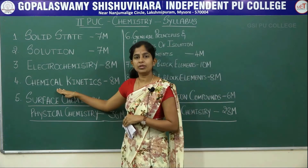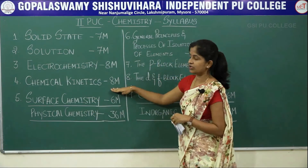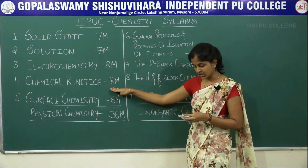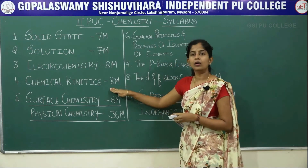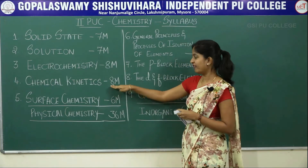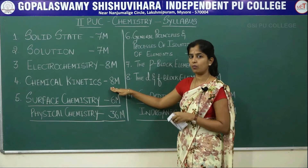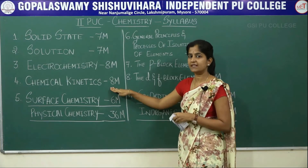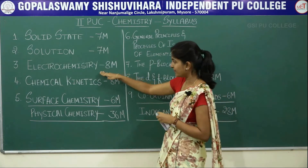The fourth chapter is chemical kinetics. Its total weightage is also 8 marks. It will have a division of 8 marks into a 1-mark question, a 2-mark question, and a 5-mark question — same as electrochemistry.